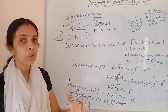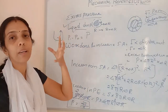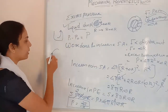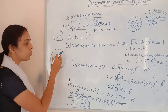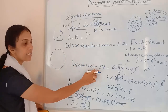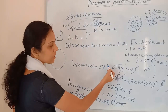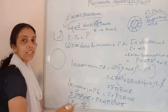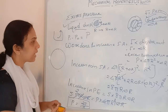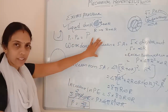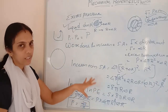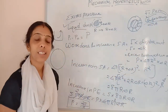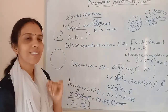For a soap bubble, we must consider two surfaces — the inside surface and the outside surface. So the increase in surface area is multiplied by 2, giving 16πRΔR. Following the same method — finding work done, then increase in potential energy as surface tension into increase in area — the final answer for a bubble is P = 4S/R. Try to do that derivation yourself; that is a homework for you.